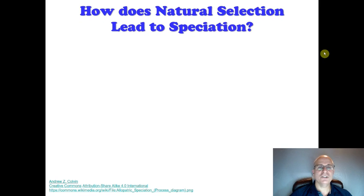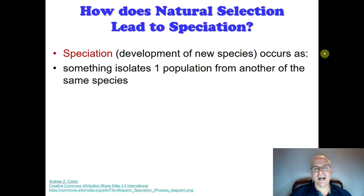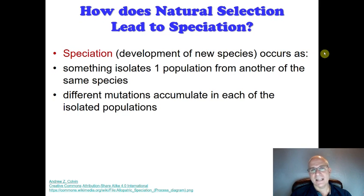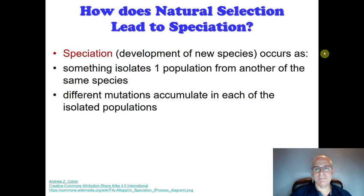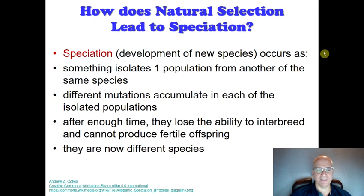How does natural selection lead to speciation — the production of a new species? Speciation is the development of a new species, and this occurs when something isolates or separates a population from another population of the same species. If you keep these populations separate from one another long enough, different mutations can accumulate in each population. If enough different mutations occur, even if you put the populations back together, they're not going to be able to interbreed — they can't mate with one another — and at that point we would consider them to be different species. Over enough time, they lose the ability to interbreed and would be different species.